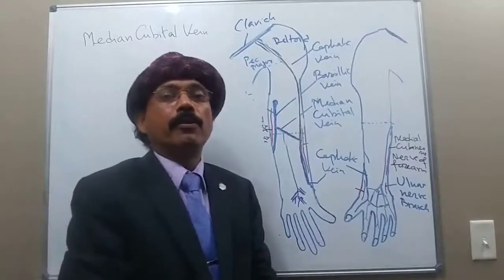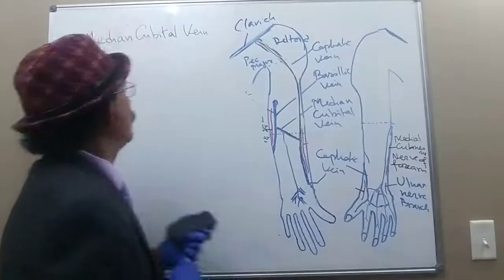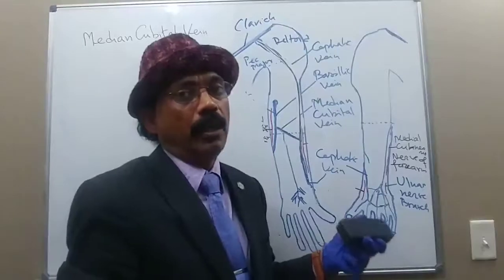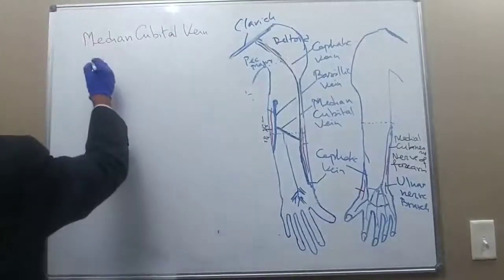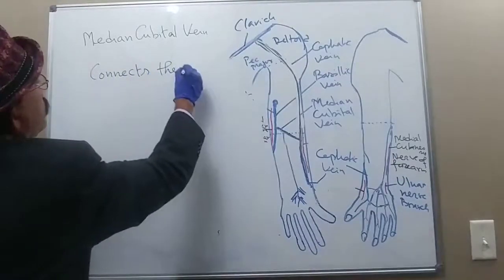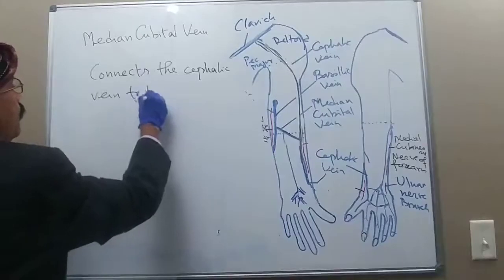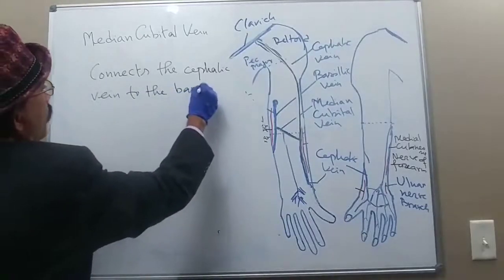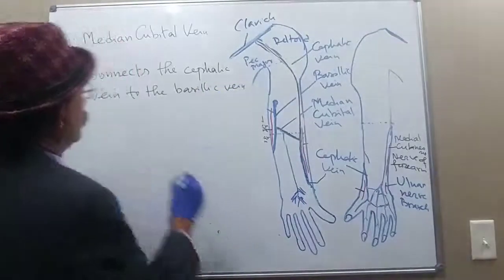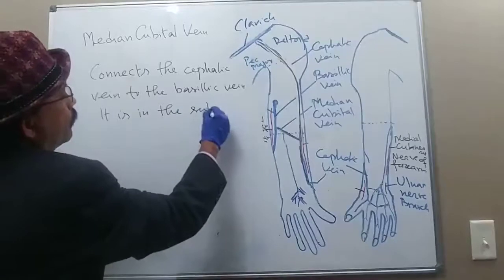The median cubital vein lies over the cubital fossa, just anterior to the elbow. It is a subcutaneous vein, like the cephalic vein and the basilic vein, and it connects the cephalic vein to the basilic vein.